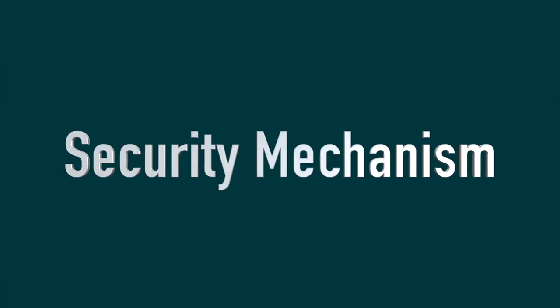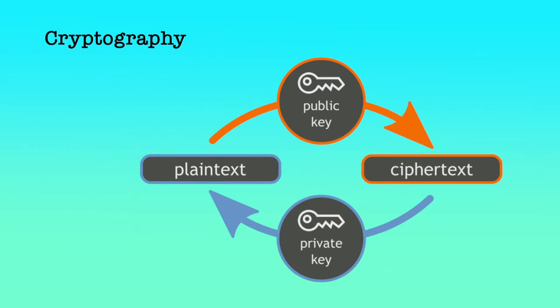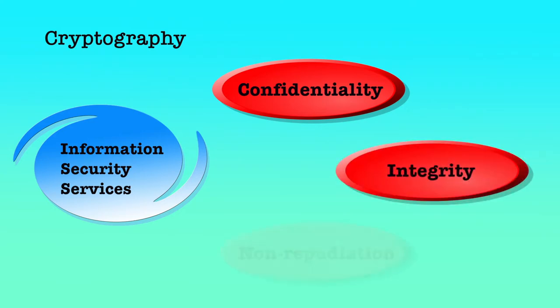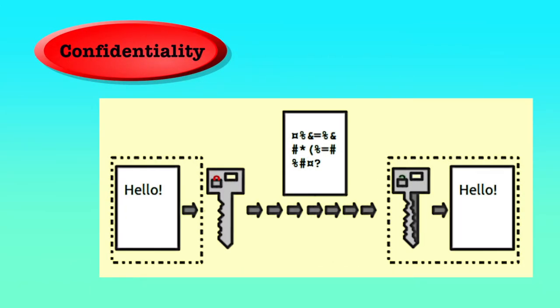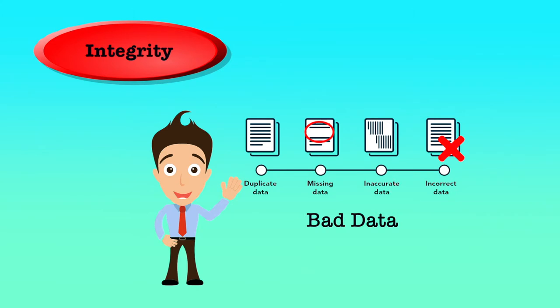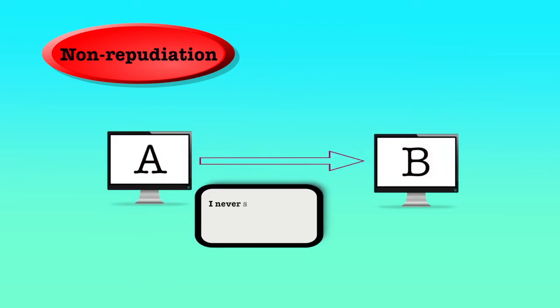Now we will discuss security mechanisms. To provide secure communication, cryptography is extensively used. Cryptography facilitates providing the three information security services: confidentiality, integrity and non-repudiation. Confidentiality is ensured because only those who have the encryption key can decode the information. Since only authorized users can send encrypted information, a user cannot deny having sent the information, and hence non-repudiation is also ensured. We will now discuss some basic terminologies that we will use throughout this lecture.